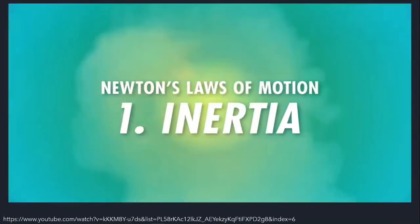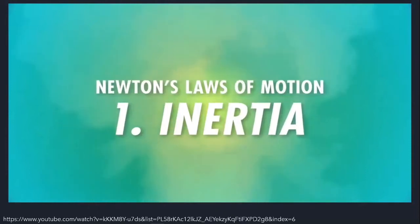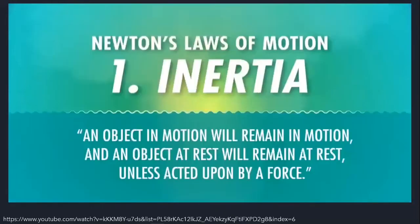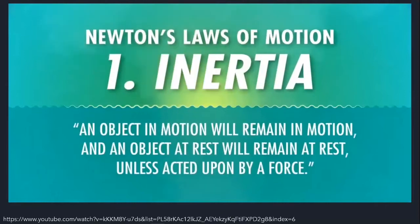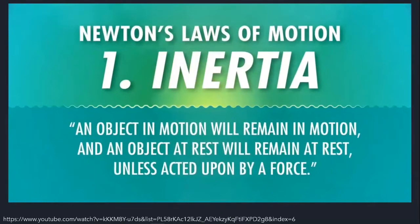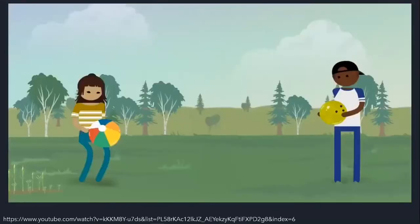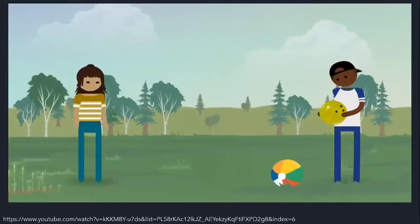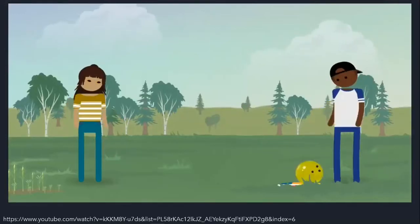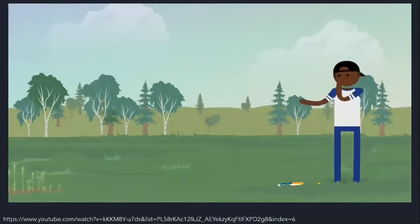Newton's first law is all about inertia — an object's tendency to keep doing what it's doing. An object in motion will remain in motion, and an object at rest will remain at rest, unless acted upon by a force. To measure inertia, the most important thing is mass. A bowling ball has more inertia than a beach ball because it has more mass — more stuff with a tendency to keep doing what it was doing.